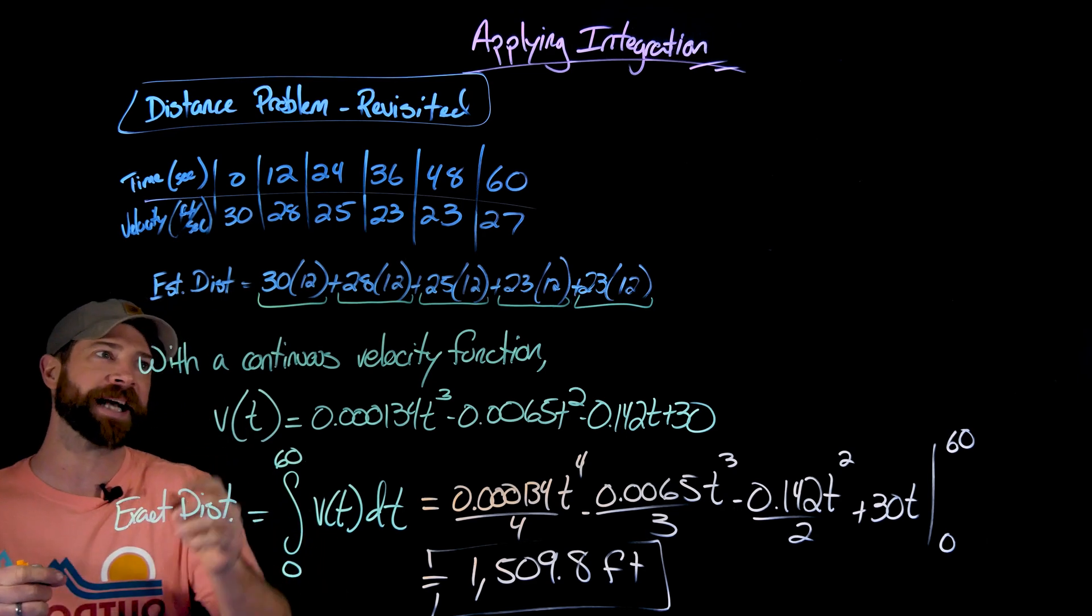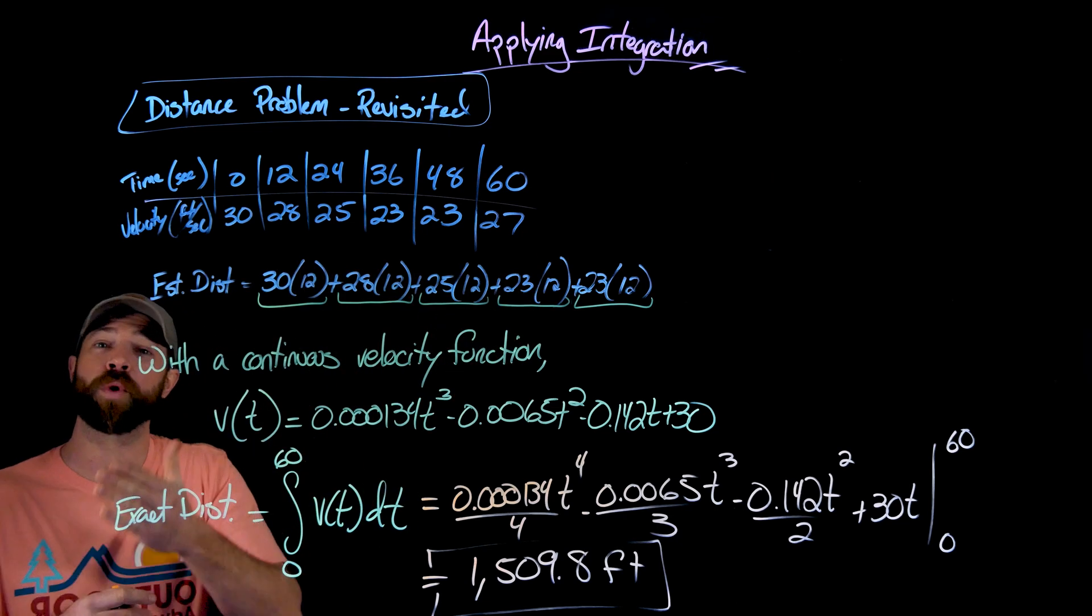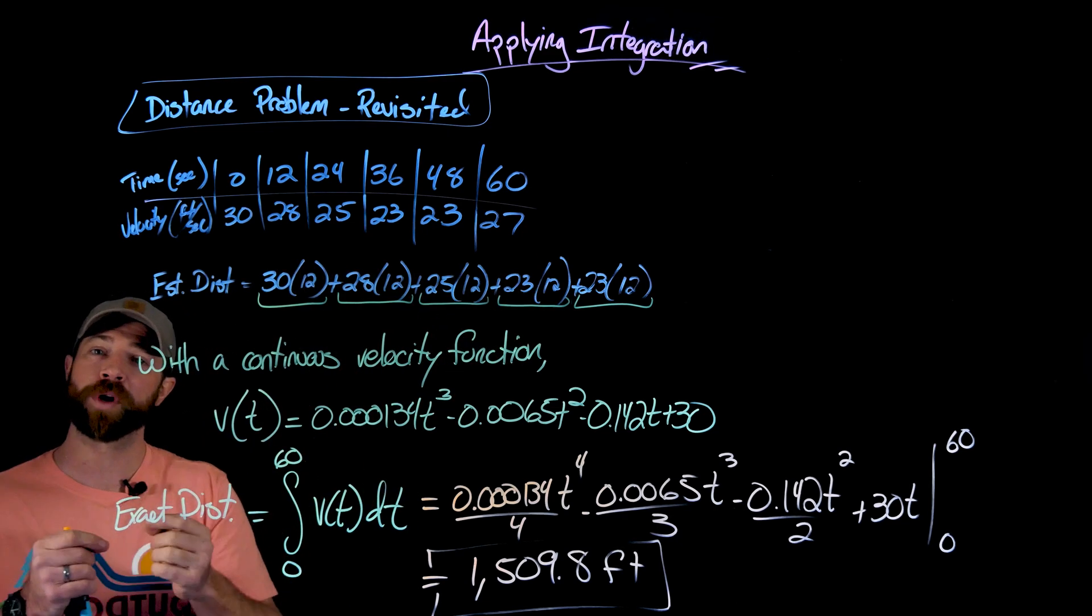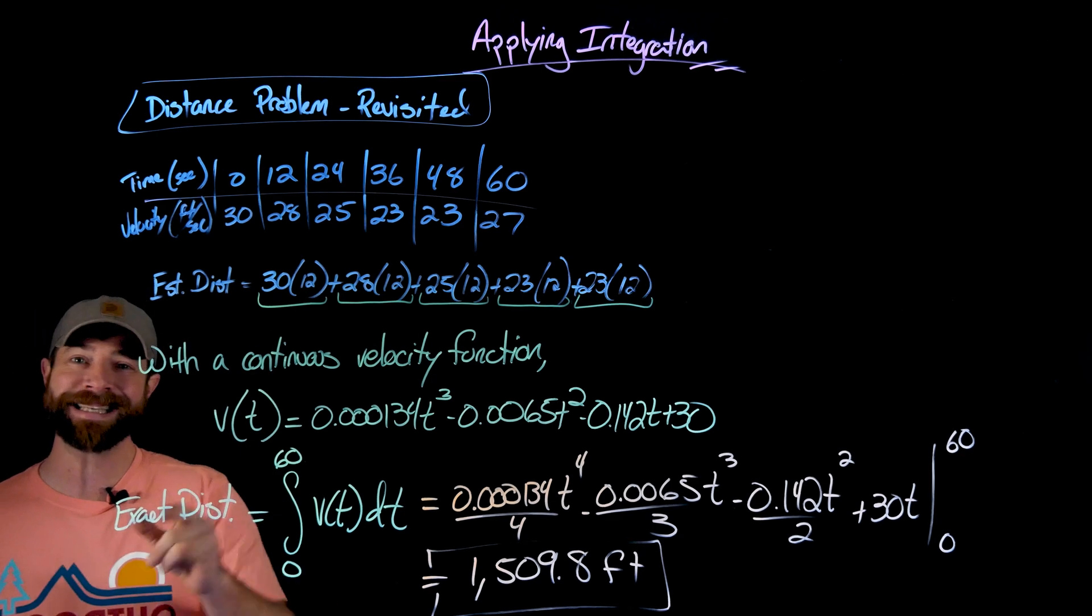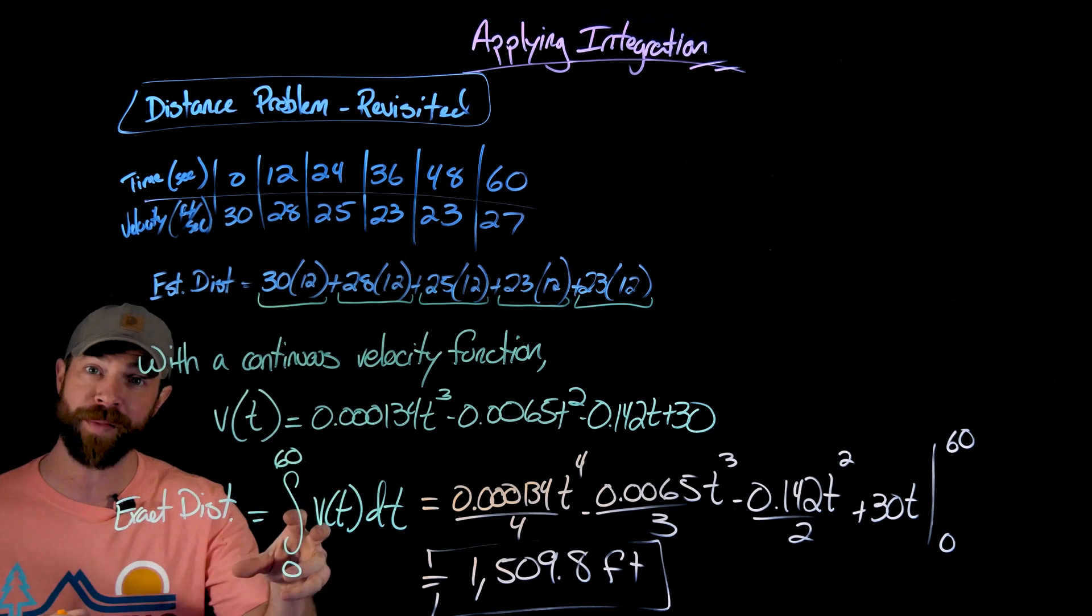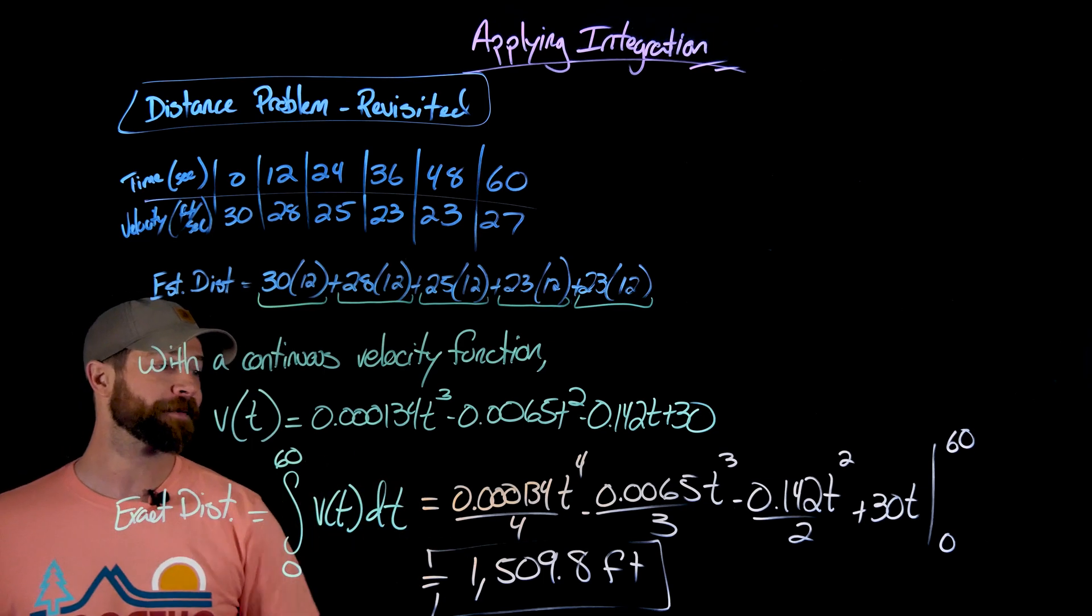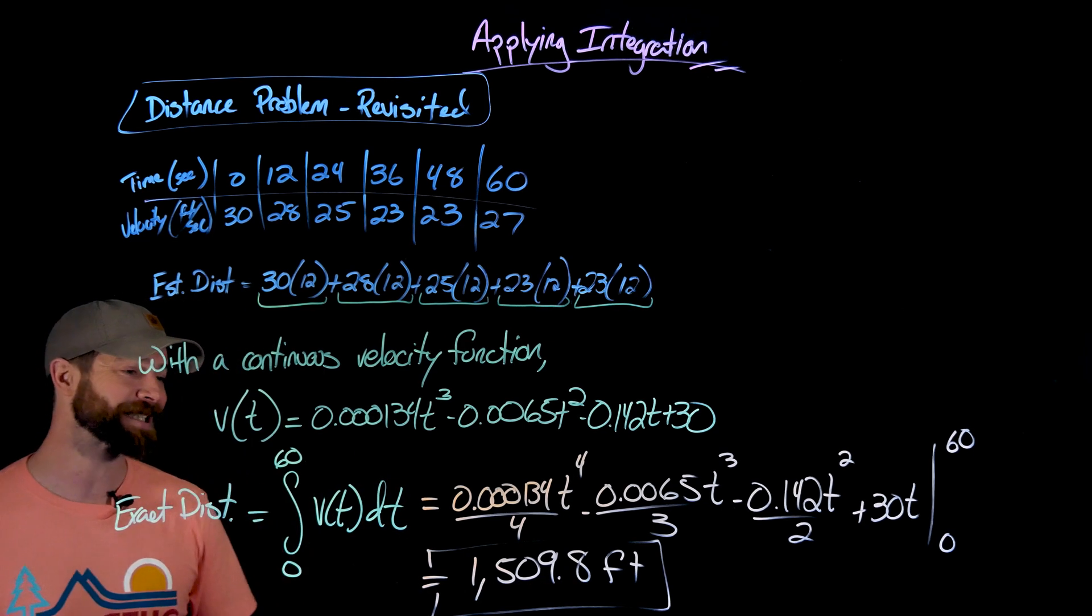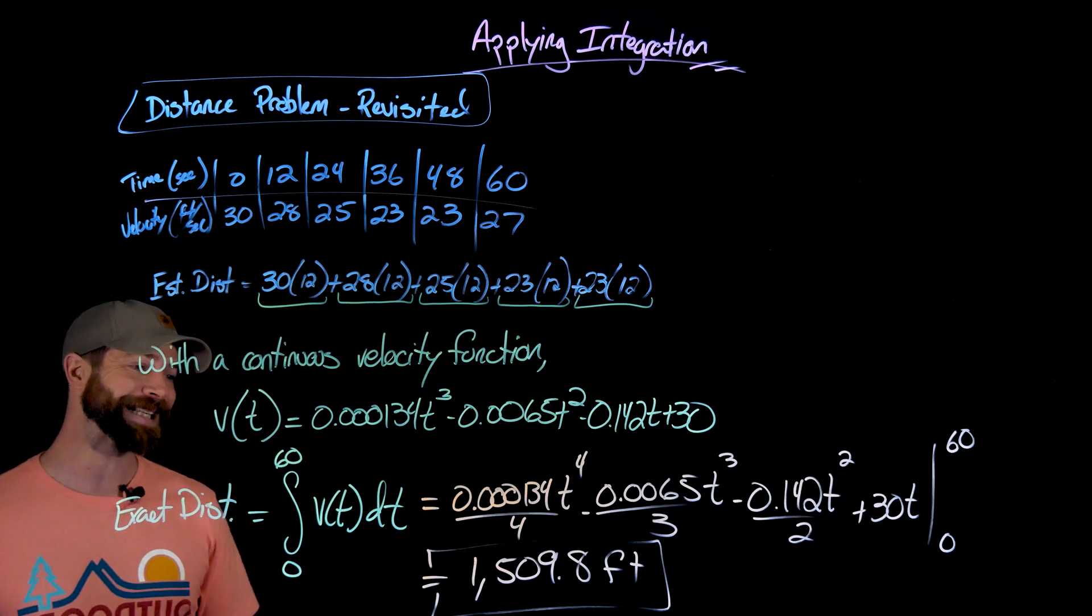Knowing that, then I can realize that while it's nice with these discrete points to get an estimate, if I want an exact value for what I'm looking for, whatever it is I'm trying to measure, in this case distance, what I would need is a continuous function over this interval. And if I integrate over that interval on that continuous function, I'll have an exact value for whatever I'm trying to measure. In this case, the distance this motorcycle traveled from zero to 60 seconds.